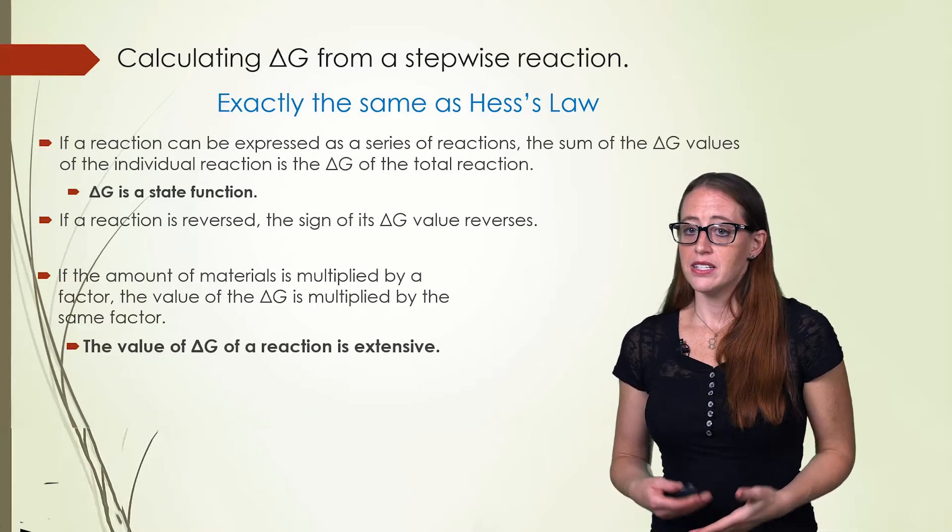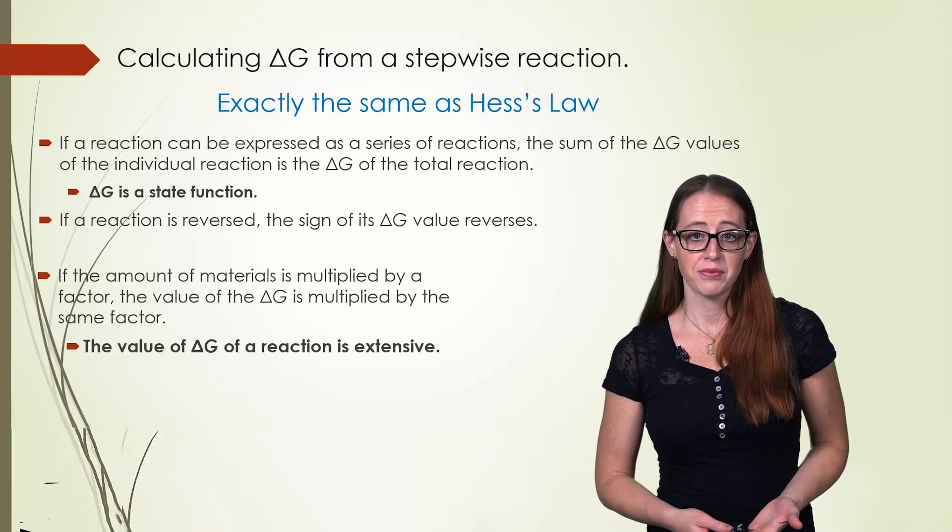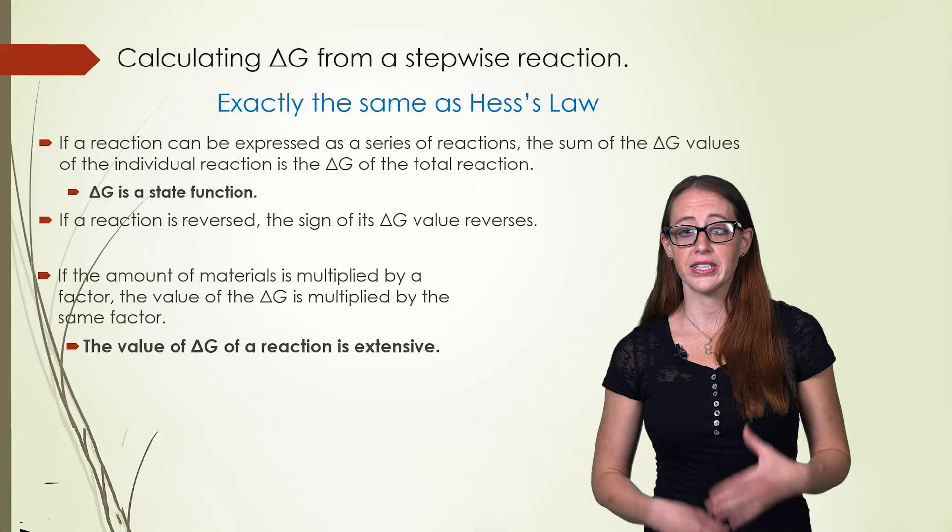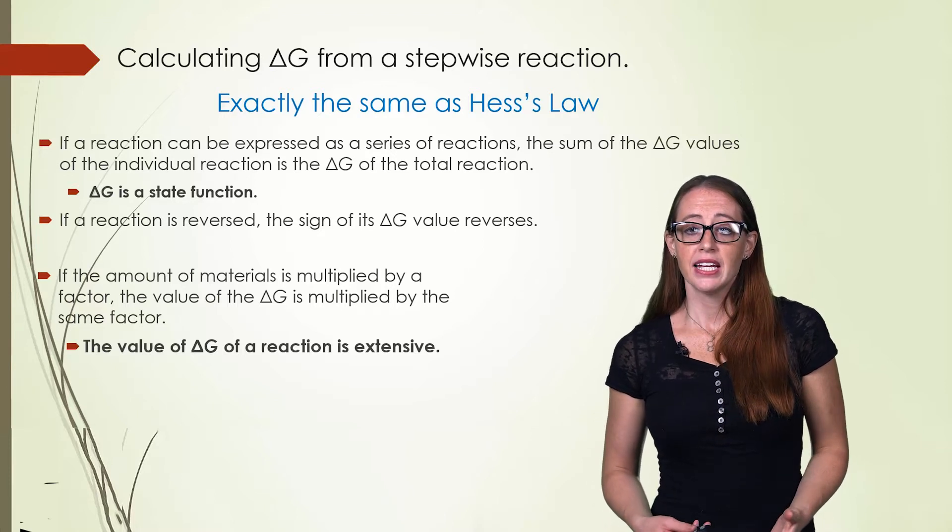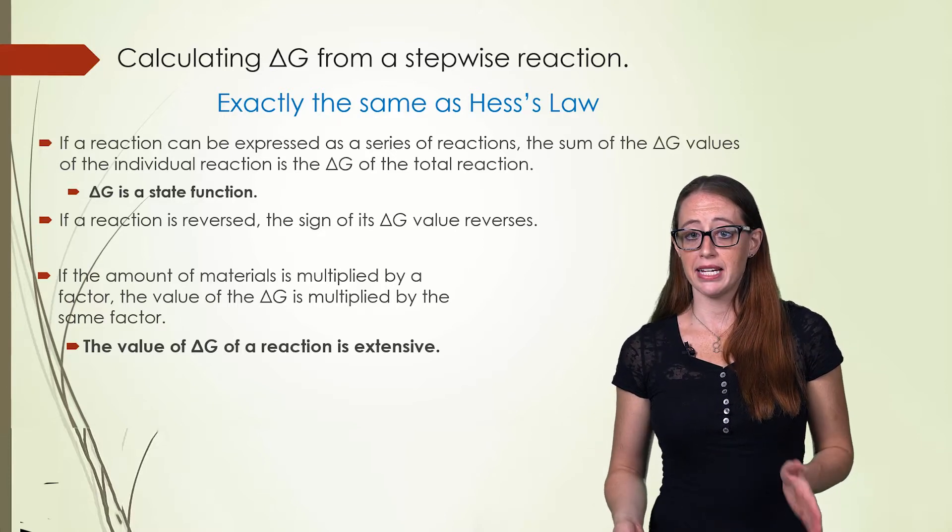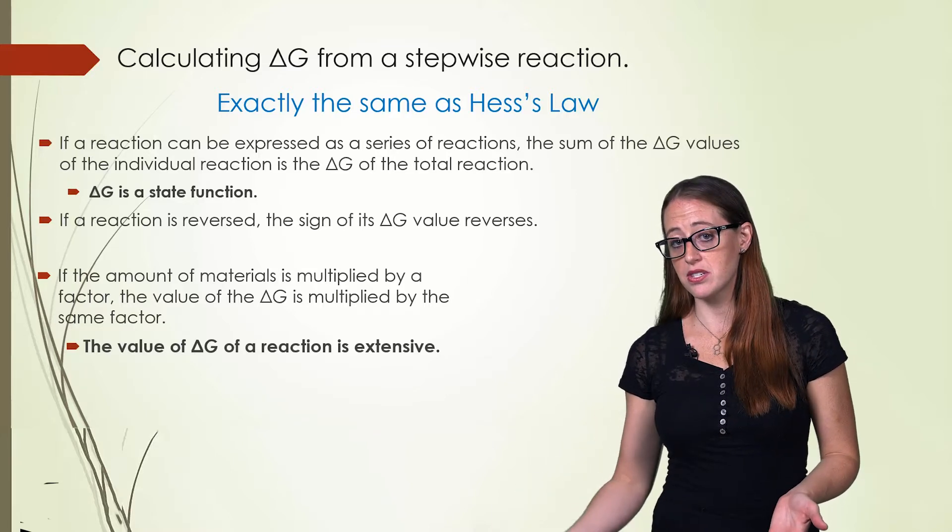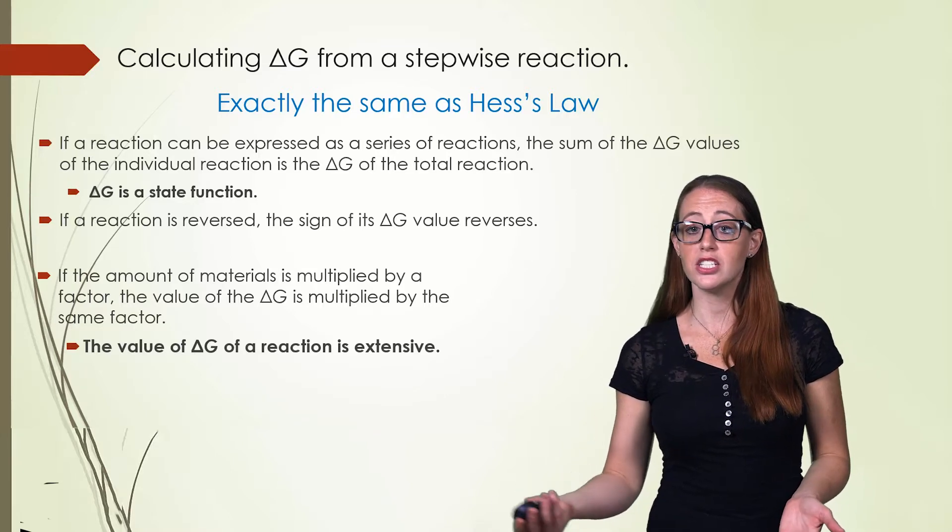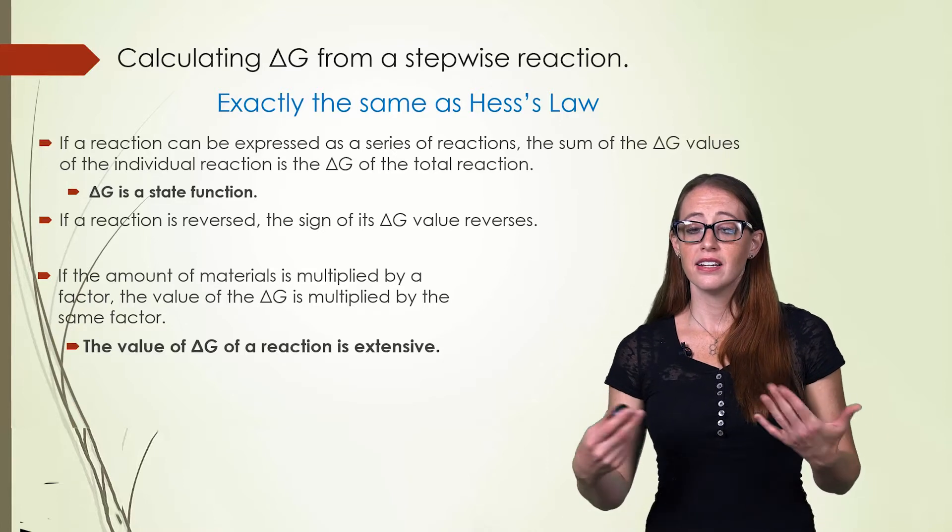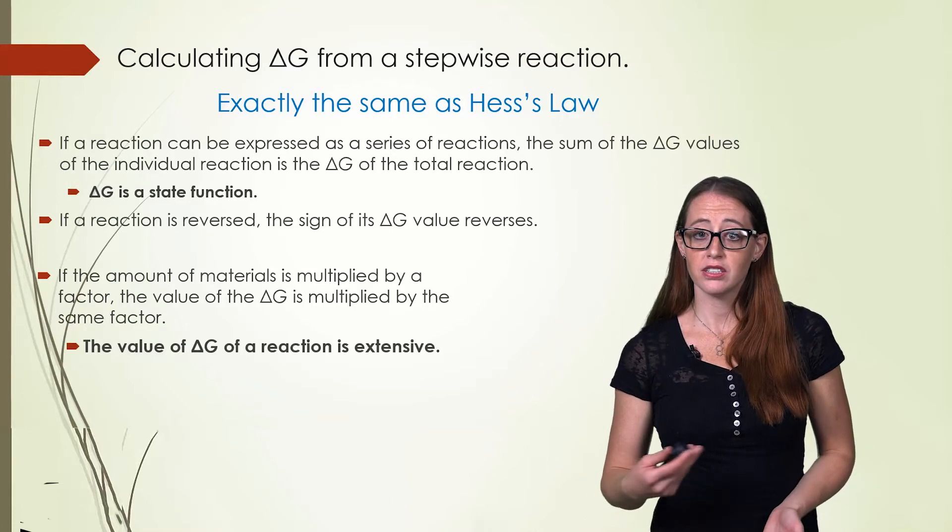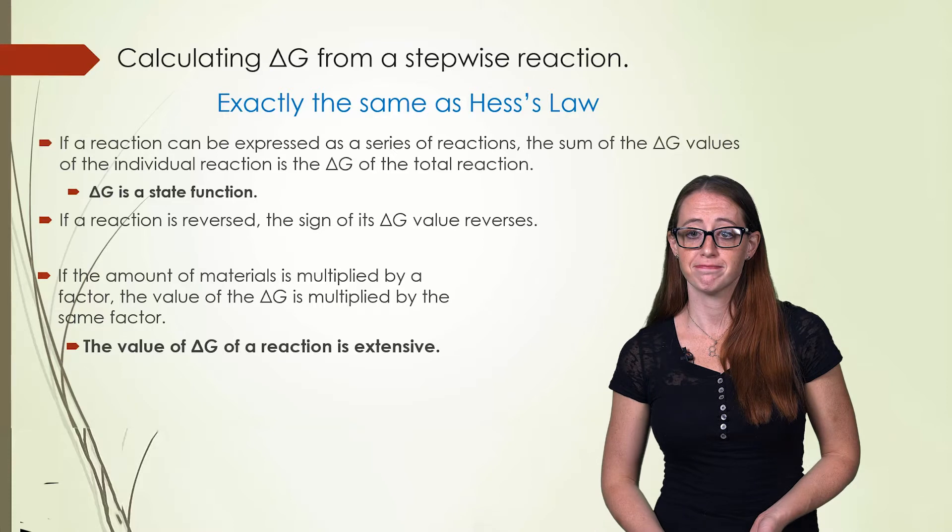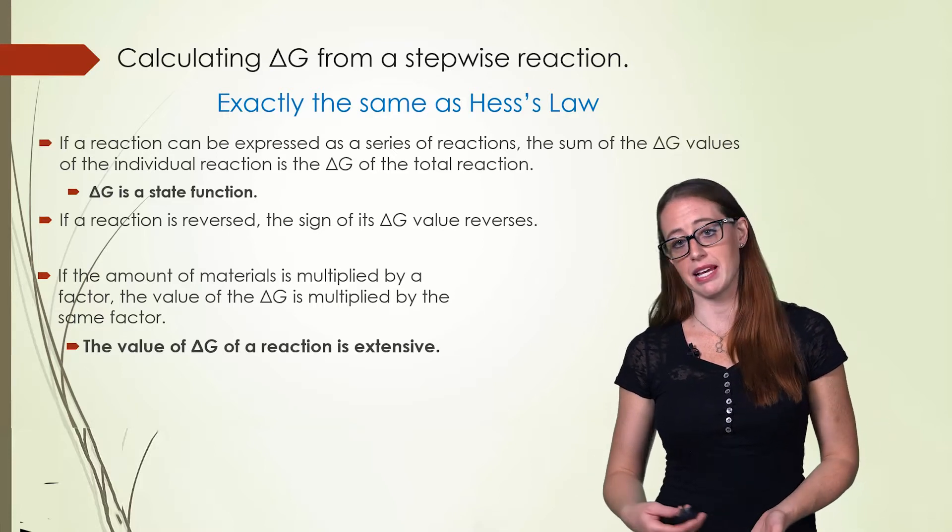If you remember back to when we learned Hess's law, this process that we're going to do here is nearly identical. If a reaction can be made by summing many other reactions together, then we can also sum those component delta G's to get the Gibbs free energy change of the final reaction. This is the exact same thing that we did with Hess's law.